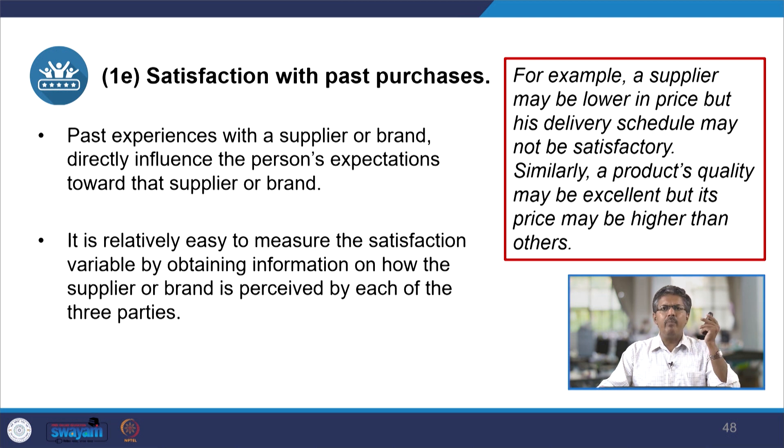For example, a supplier may be lower in price, but the delivery schedule may not be satisfactory. In that case, the finance person does not mind, but the production or manufacturing department will be very unhappy. On the other hand, if a product's quality is excellent but its price is very high, the engineering department is happy but the finance department may not be — because cutting costs is their primary job. These are some important differences that affect expectations.